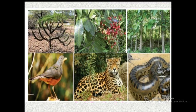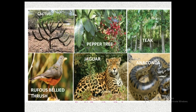Students, you can see a few images on your screen. Can you identify these pictures? Here are the names of these pictures. We have cactus, then the paper tree, and then the tick. This is said to be the flora. And we have a bird named rufous-bellied thrush, then an animal jaguar and a reptile anaconda. This is the fauna. So where have you seen these plants before? You might have seen them on the internet or maybe in a book or somewhere.